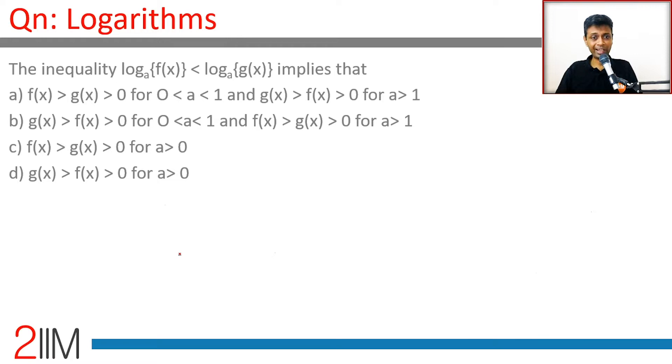log of f(x) to the base a is less than log of g(x) to the base a implies that - what does it imply? To start with, log is defined only for positive numbers, that means f(x) and g(x) have to be positive.